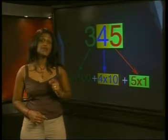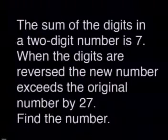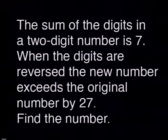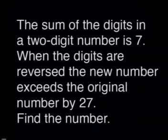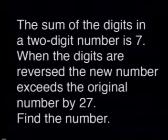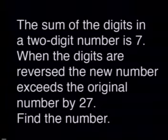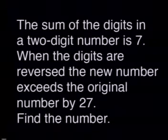Keep this in mind for our next problem. The sum of the digits in a two-digit number is 7. When the digits are reversed, the new number exceeds the original number by 27. Find the number. Let's start by making sure that you understand the question.